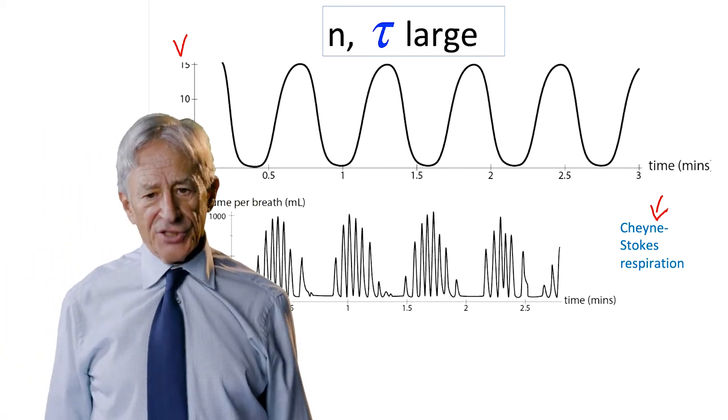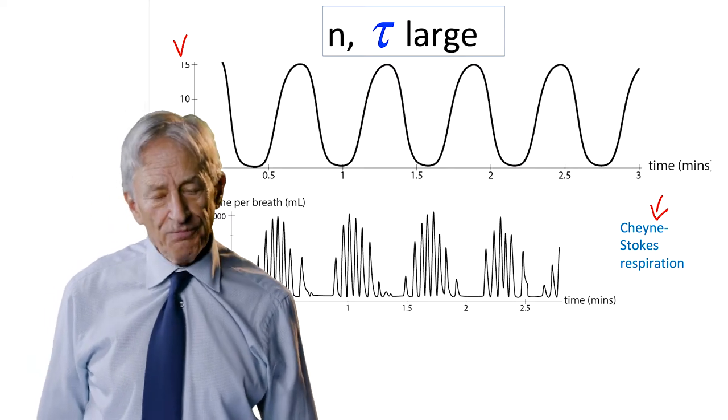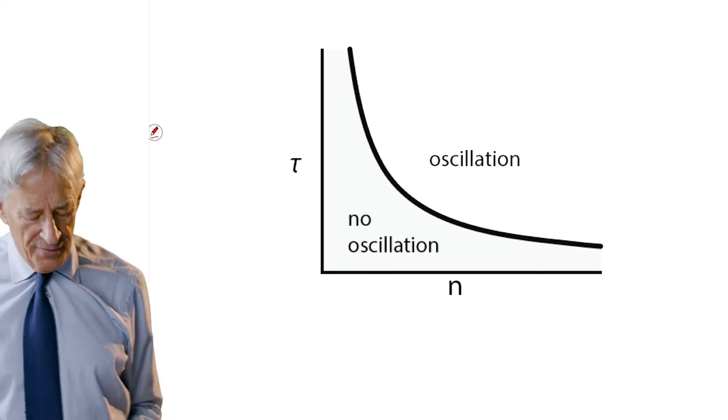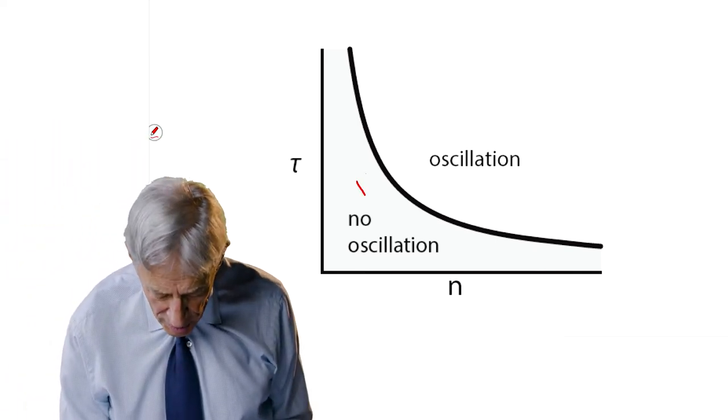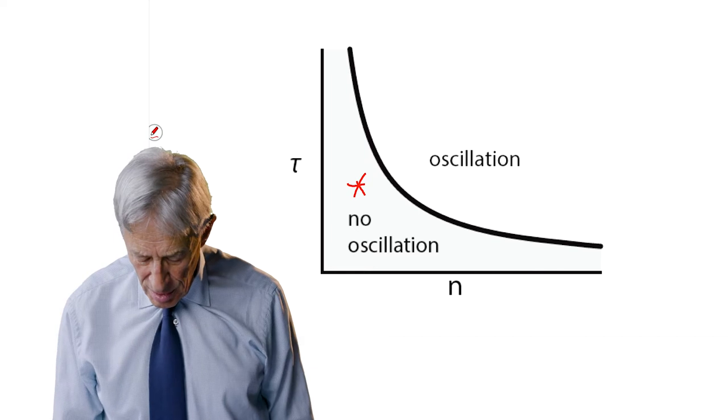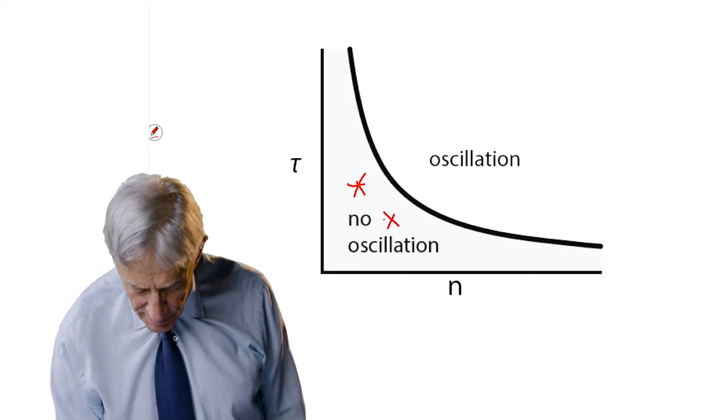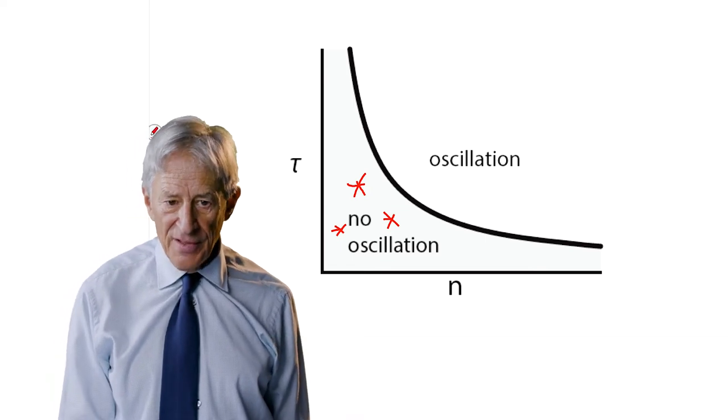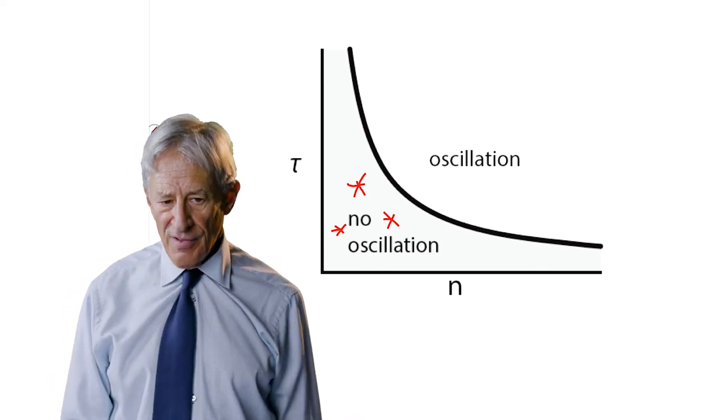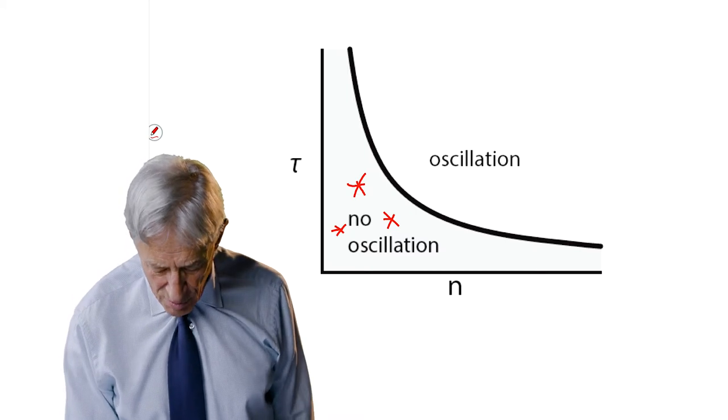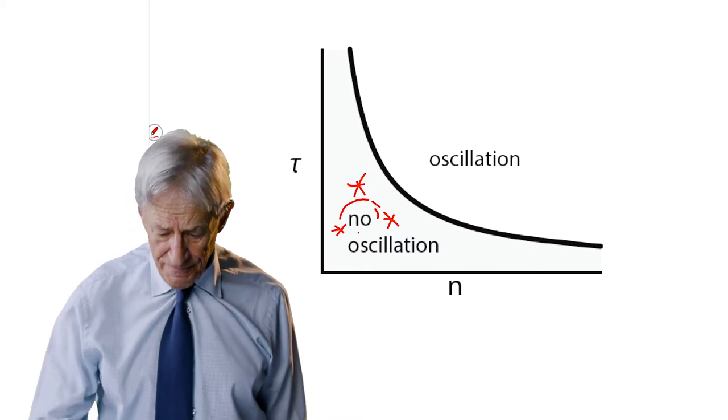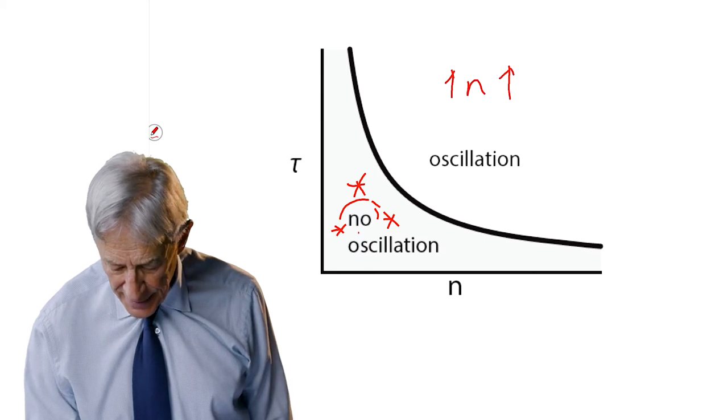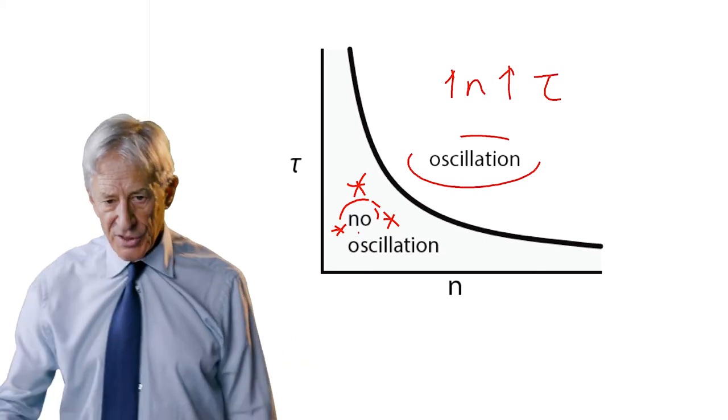And a little bit of simulation, or actually a lot of simulation, gives you a very interesting relationship. That when N is small and tau is small, we're in this part of parameter space. Notice this is not state space. This is parameter space. Low N, low tau, no oscillation.